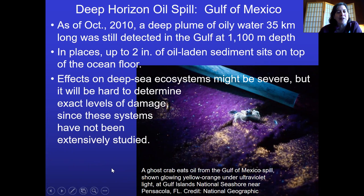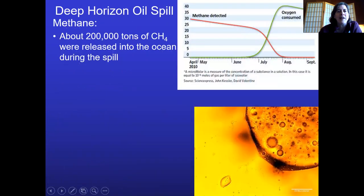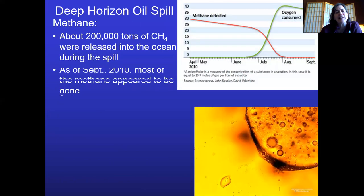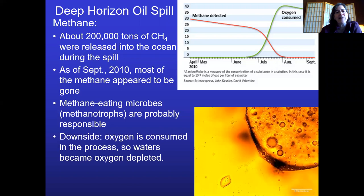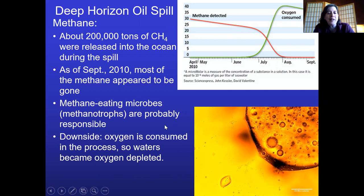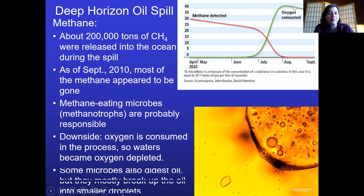Interestingly, there are microbes in the ocean that consume oil. Methanogens can ingest oil and break it down. The downside is that the process consumes oxygen, oxygen-depleting the water. A graph shows that as methane went down as microbes consumed it, oxygen consumption went up. The microbes may also break oil up into smaller droplets — oil doesn't really ever fully go away.